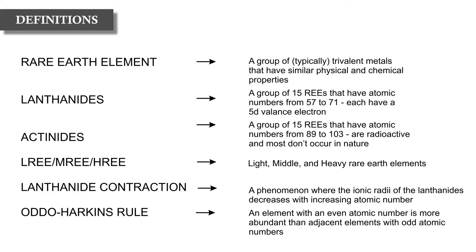The rare earth elements are a group of typically trivalent metals that have similar physical and chemical properties. The group we're most commonly concerned with are referred to as the lanthanides — a group of 15 rare earth elements with atomic numbers ranging from 57 to 71, each having a valence electron in the 5d shell. You can look at the structure of atoms in one of the lessons at the start of the igneous petrology series.